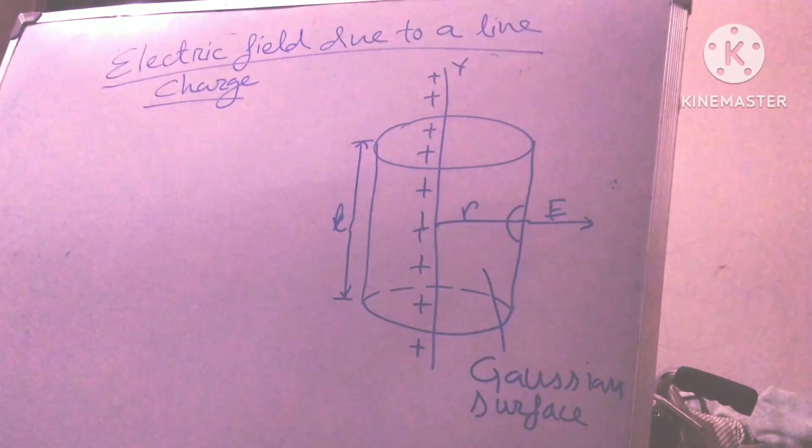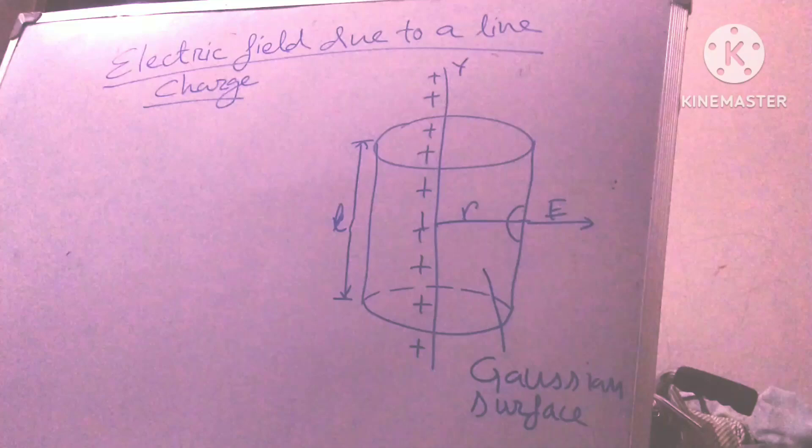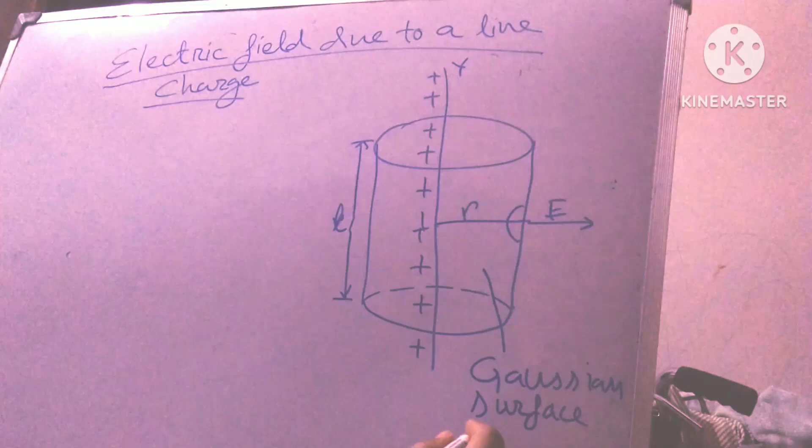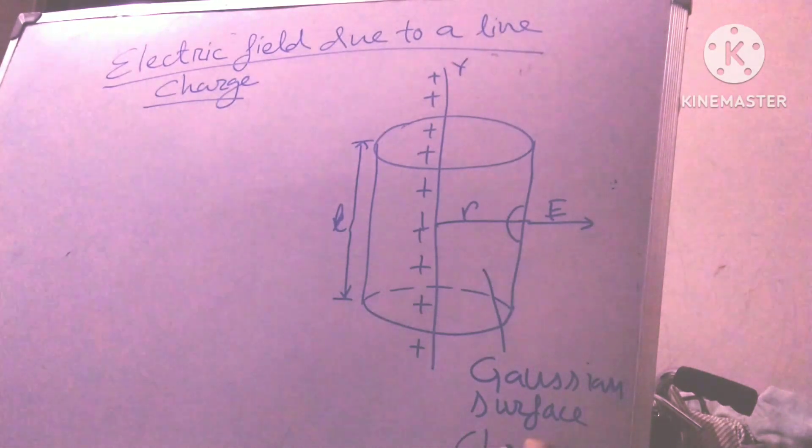So friends, what is Gaussian surface? Gaussian surface around a charge distribution may be a point charge, a line charge, a surface charge, or a volume charge is closed surface. The surface is closed.